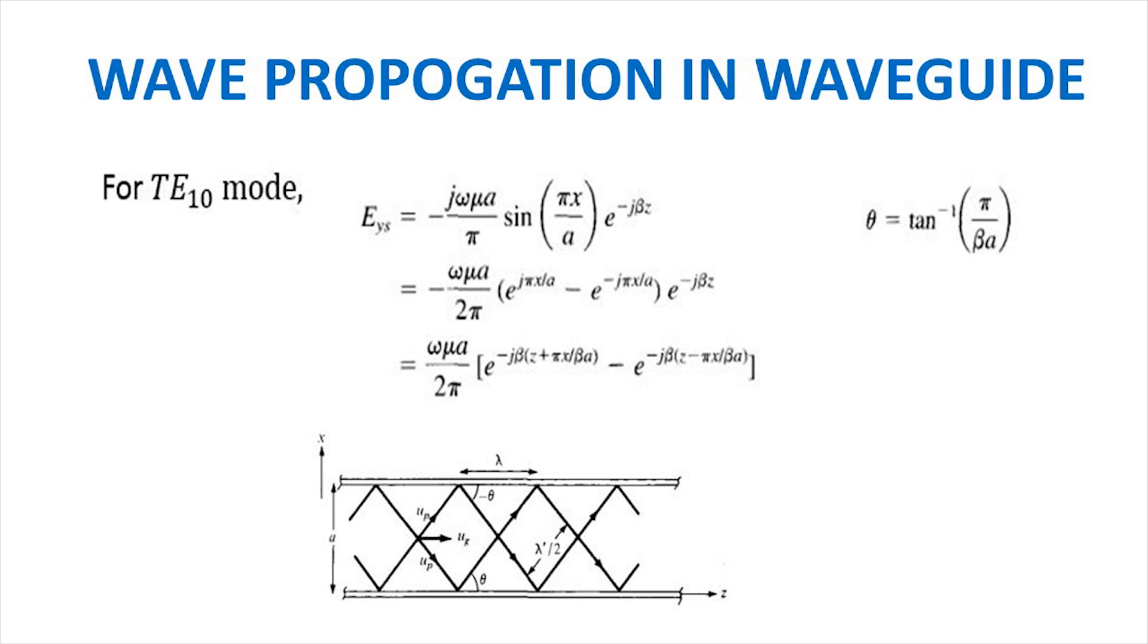Example is shown for TE_10 mode. The first term represents a wave traveling in the positive z direction at an angle theta with the z axis. The second term represents a wave traveling in the positive z direction at an angle minus theta. The field may be depicted as a sum of two plane TEM waves propagating along zigzag paths between the guide walls at x equals to zero and x equals to a. The decomposition of TE_10 mode into two plane waves can be extended to any TE and TM mode. When n and m are both different from zero, four plane waves result from the decomposition.